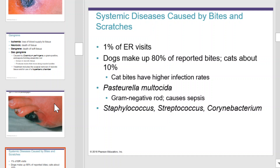Systemic diseases caused by bites and scratches make up about 1% of ER visits. Dog bites make up 80% of reported bites. Cat bites are about 10%, though cat bites have a higher infection rate than dog bites. Pasteurella, a gram-negative rod, causes sepsis and is common from animal bites, along with Staphylococcus, Streptococcus, and Corynebacterium.